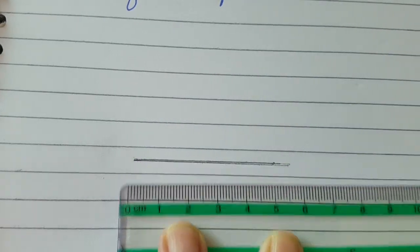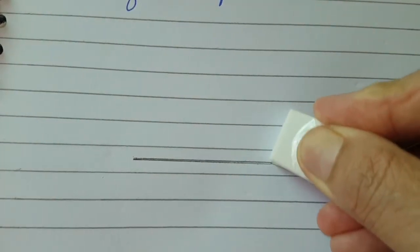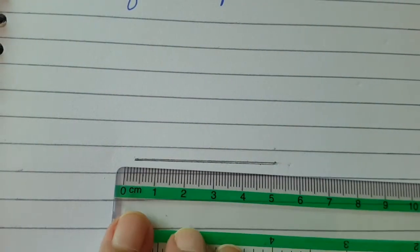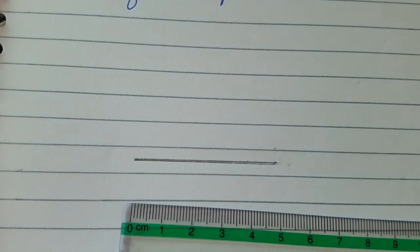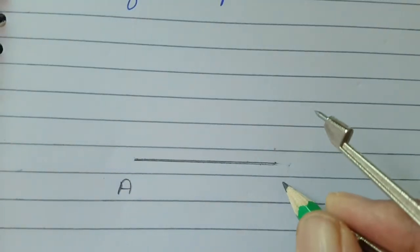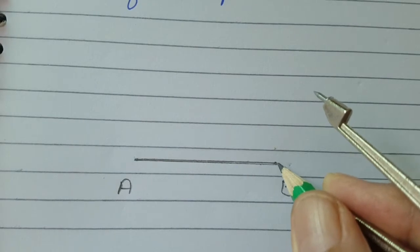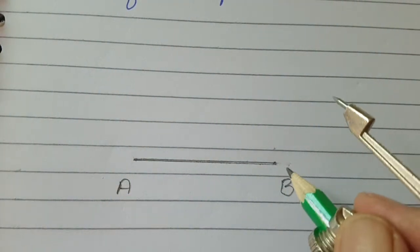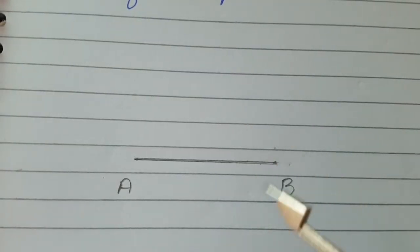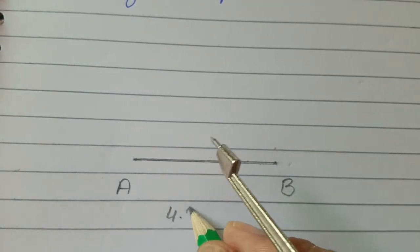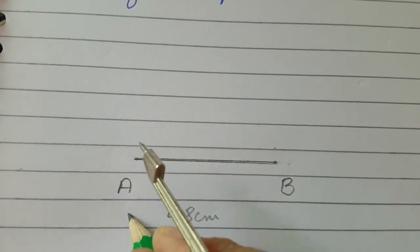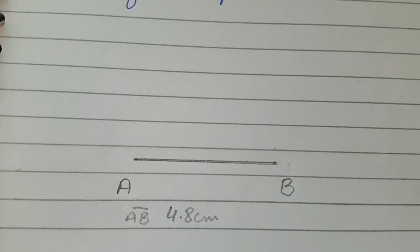This is the exact four point eight centimeter line. You will name the line as line AB — A is this end and B is this end. Don't extend the line and don't make any dots or circles at the end of this line, because this is a line segment having a definite length of four point eight centimeters. The name of the line is AB.